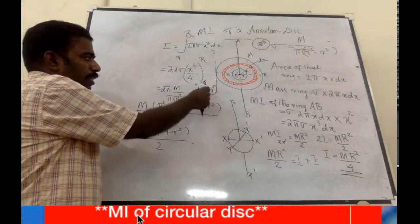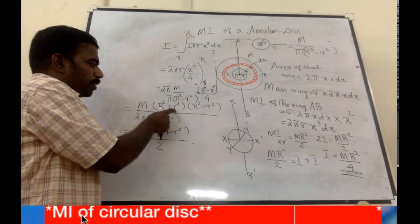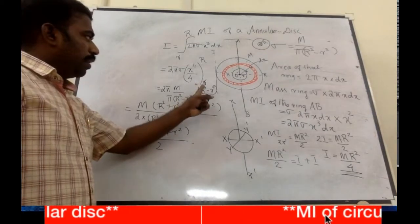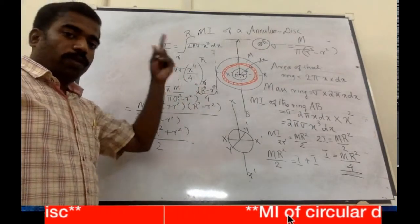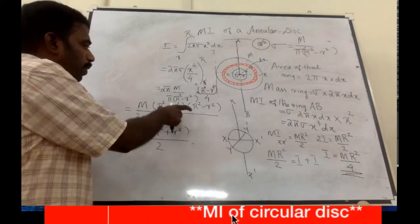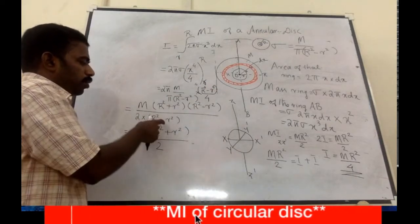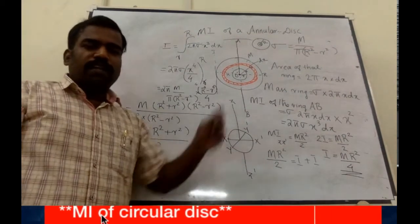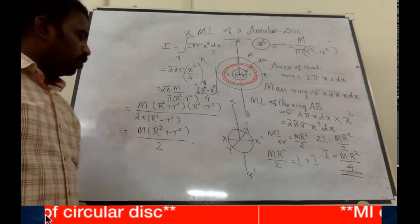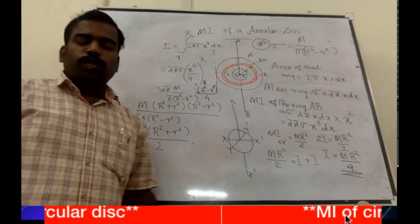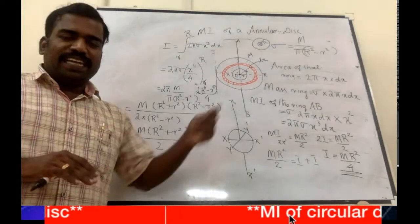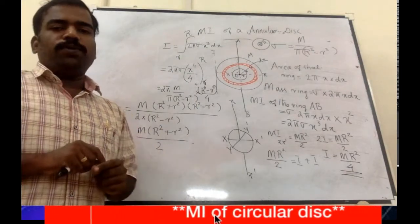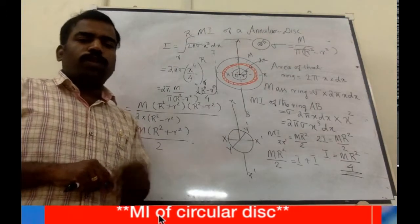We get R to the 4 minus small r to the 4, which factors as (R squared plus r squared) times (R squared minus r squared), using the identity a squared minus b squared equals (a plus b)(a minus b). After cancellation with the denominator, you get the moment of inertia of the annular disc about an axis passing through the center and perpendicular to the plane: M by 2 times (capital R squared plus small r squared).